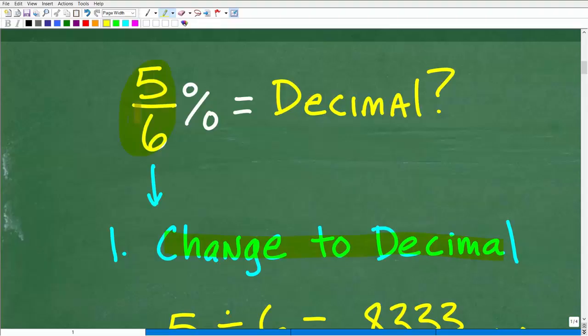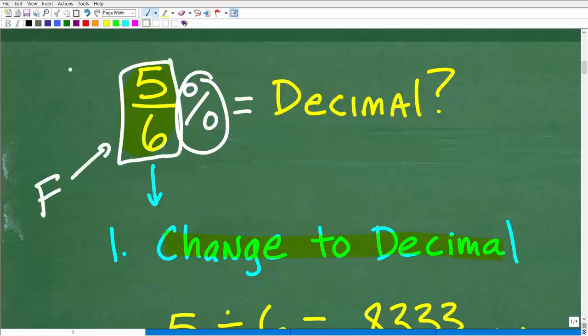We'll change out this fraction and get a decimal equivalent. That doesn't mean that our percent goes away. We're just going to switch out this fraction right here for a decimal. We'll still have a percent, but this is going to be our first step.